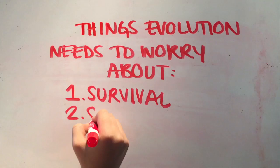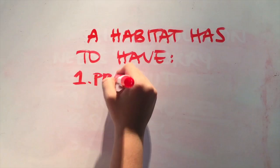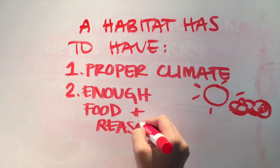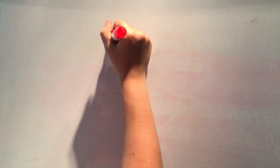A big factor in evolution is where a species is found, because a habitat has to have everything a species needs—from proper climate, enough food and resources, and not an overwhelming amount of predators—in order to survive. If one of those is missing or lacking, a species has to adapt, develop a skill, or move to another place to ensure the existence of future generations. Let me explain with an example.